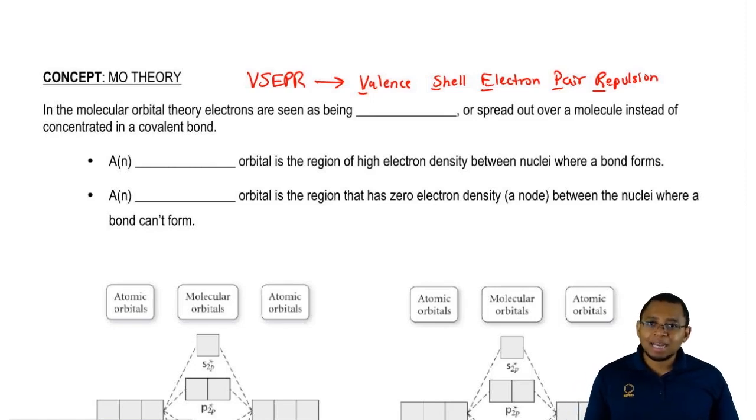Now we're going to talk about the second type of theory, atomic theory or molecular orbital theory. In the molecular orbital theory, electrons are seen as being delocalized or spread out over a molecule instead of concentrated in a covalent bond.